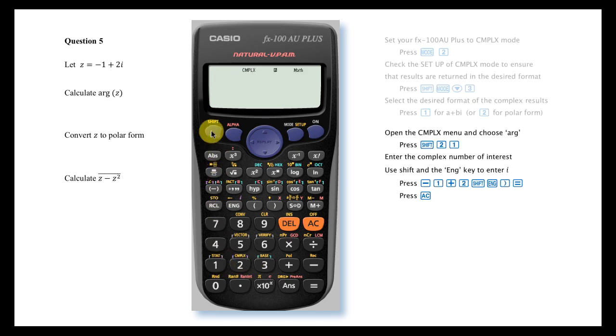To perform our first calculation, open the Complex menu by pressing Shift and then 2 and select 1 to enter the Argument command. Enter the complex number of interest using Shift and the Engineering key to enter I and then press Equals.